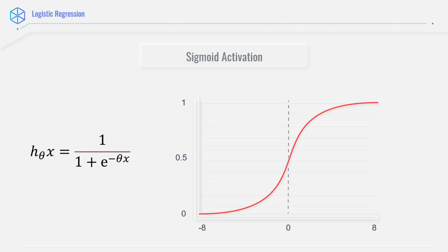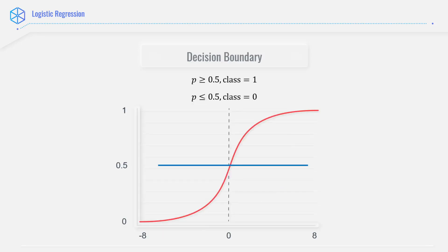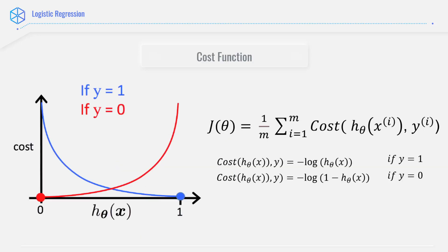Now that we have knowledge about the sigmoid activation function and the decision boundaries, let's move on to the next part that is cost function for logistic regression.